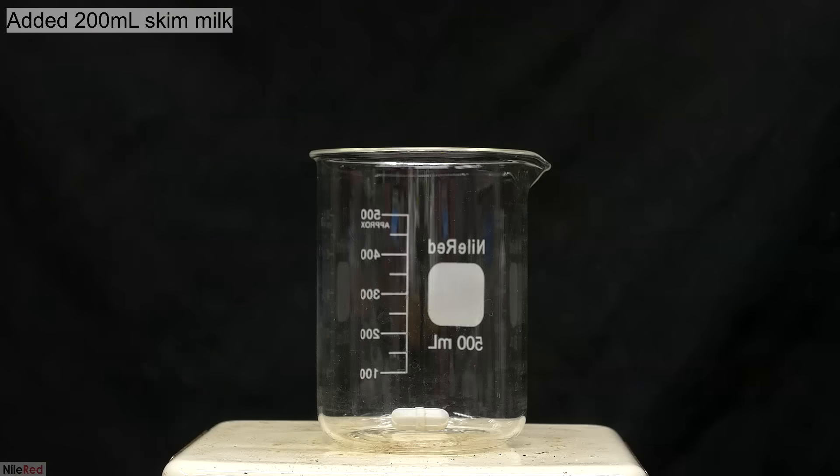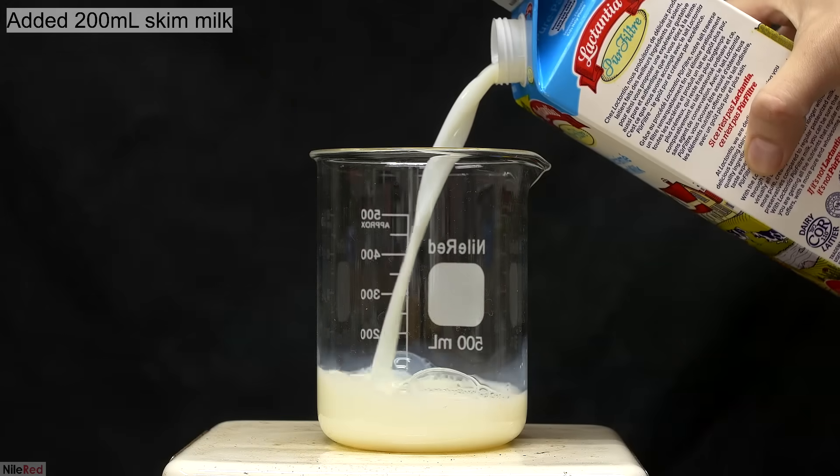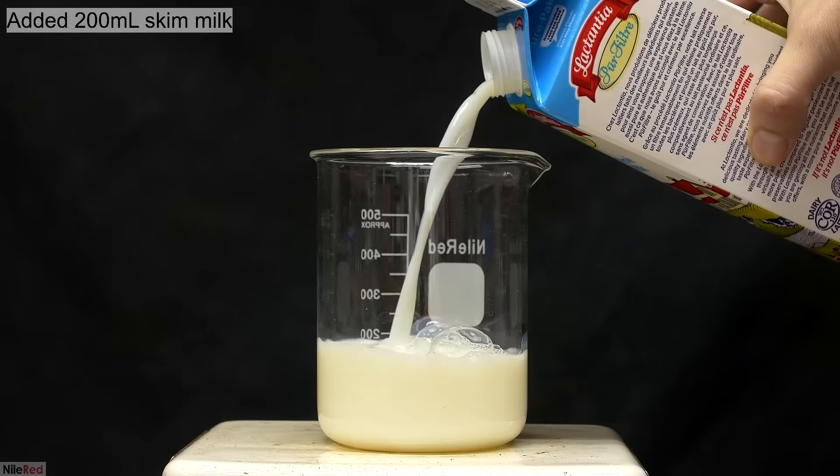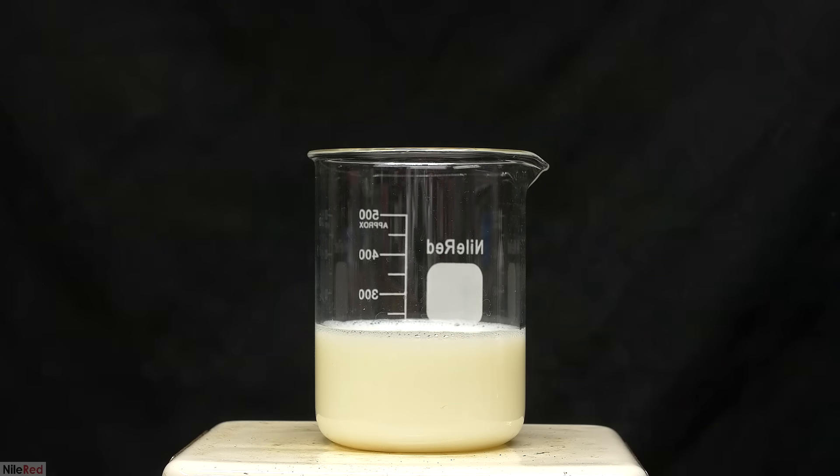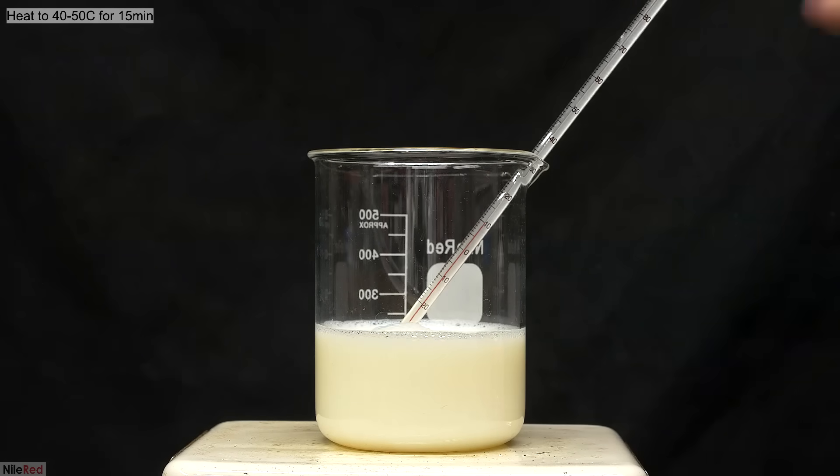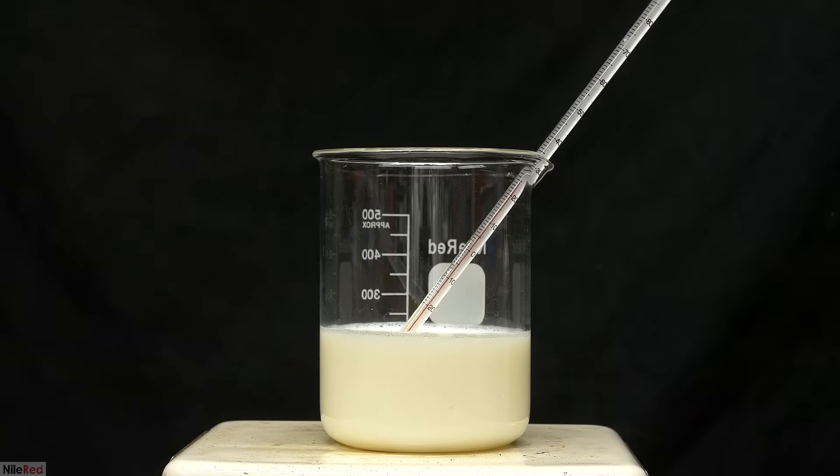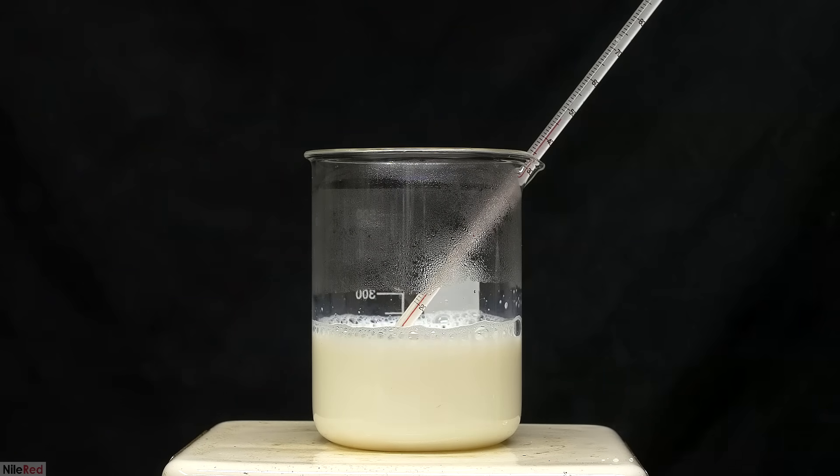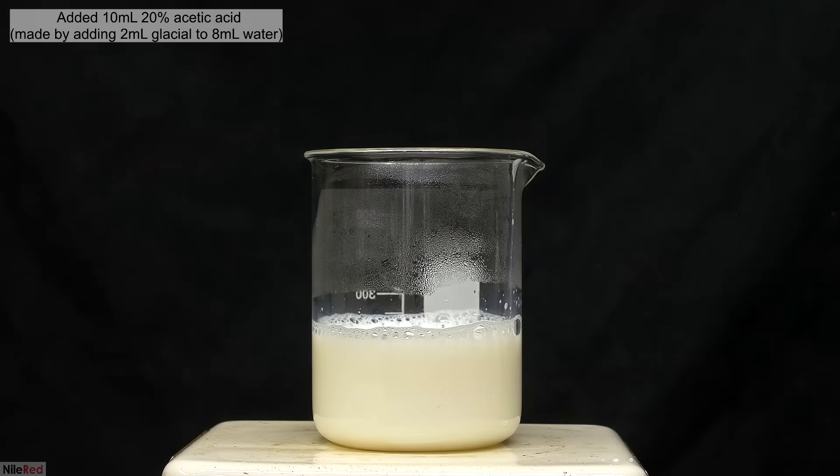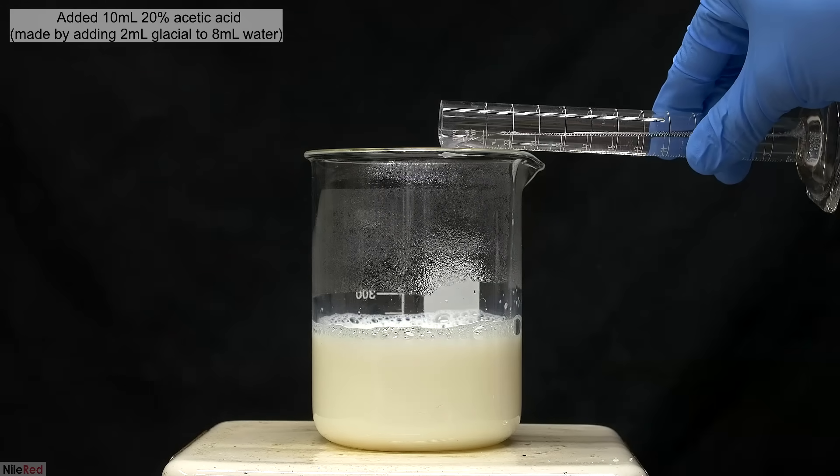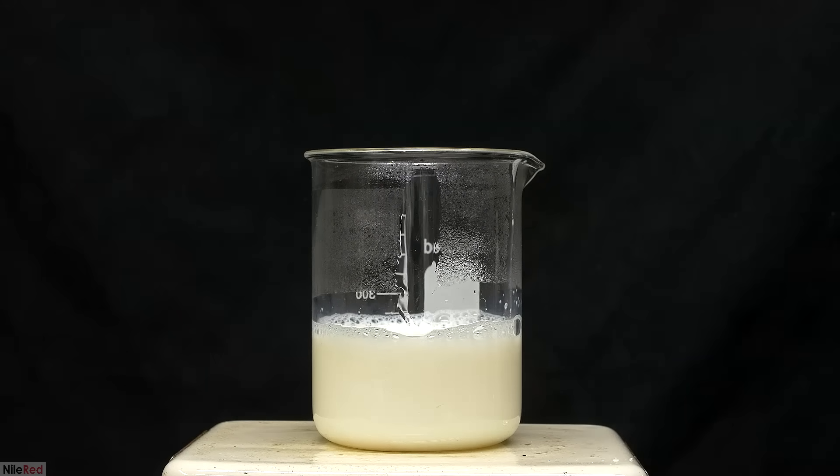A magnetic stir bar is added to a beaker, and I pour in about 200 milliliters of skim milk. I turn on the stirring and the heat, and then I add a thermometer. The goal now is to heat the milk to about 40 to 50 degrees Celsius, and to keep it there for 15 minutes. From this angle, it might be hard to tell, but it is in fact stirring. Anyway, after 15 minutes the thermometer is removed, and I start to add acetic acid. The acetic acid is added in small portions, and I wait several seconds between each addition.